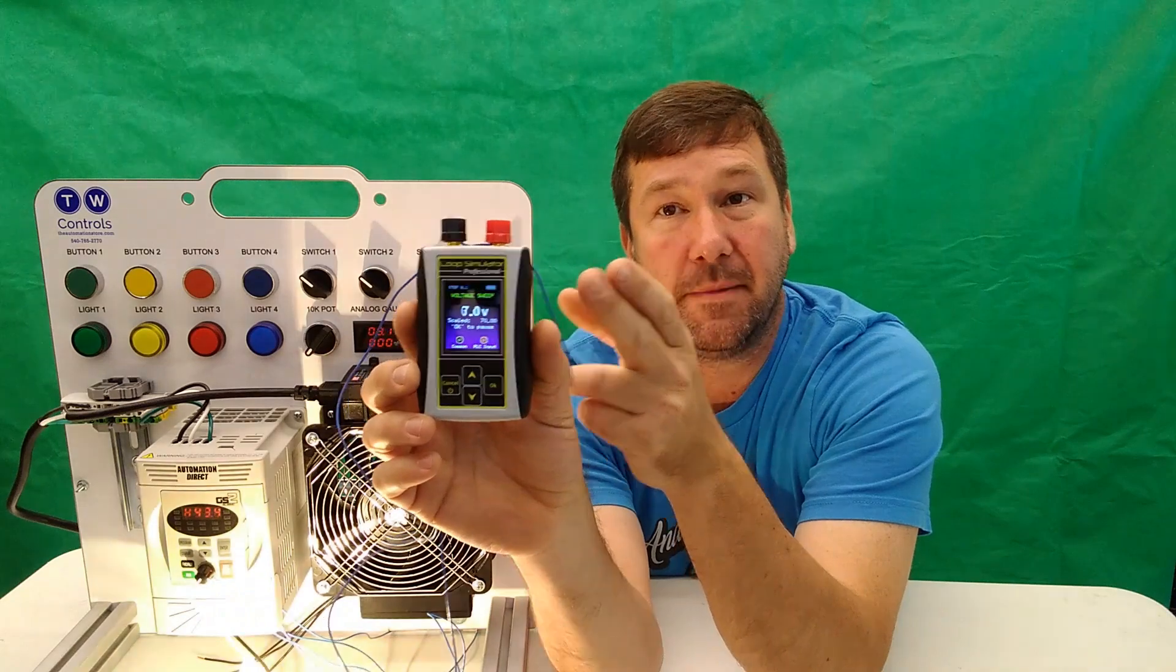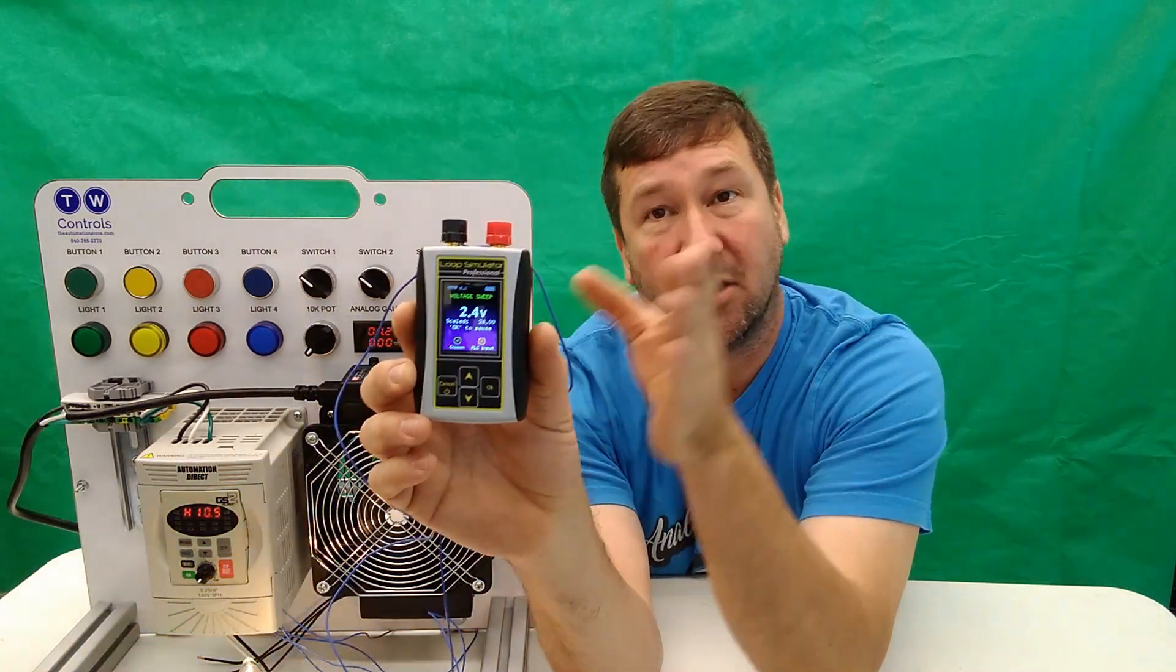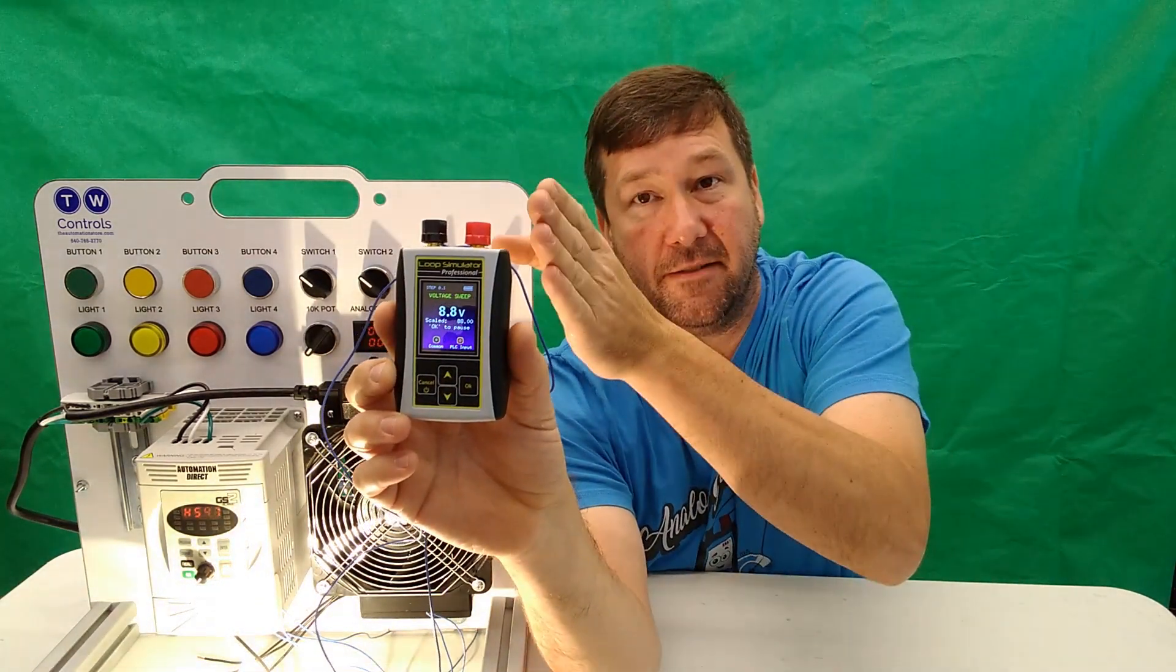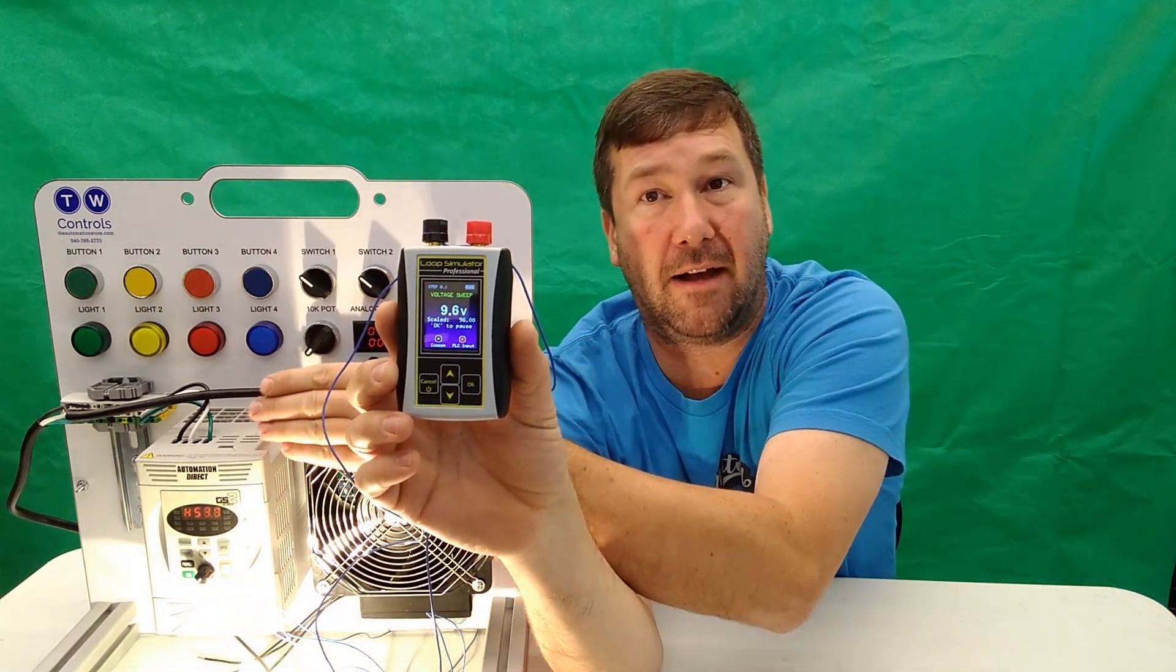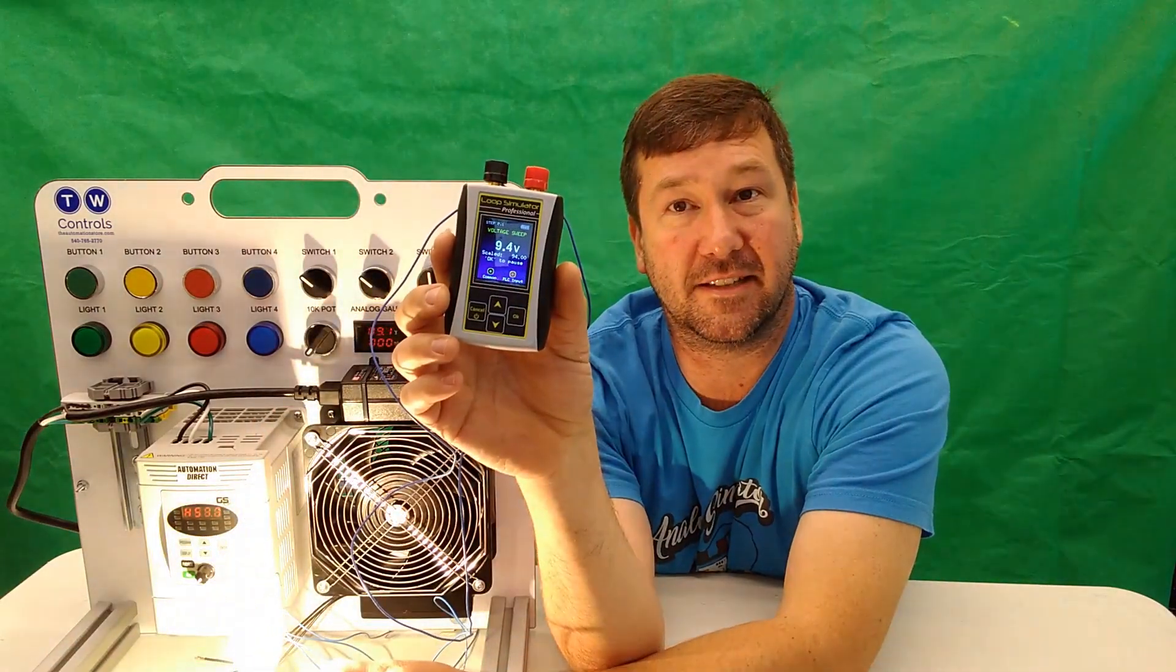What's happening here is our analog simulator is sending a signal between zero and 10 volts and then back to zero to this drive, which is controlling the intensity of this light.